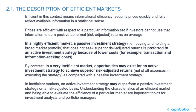Prices are efficient with respect to a particular information set if investors cannot use that information to earn positive abnormal risk-adjusted returns on average. In a highly efficient market, a passive investment strategy — buying and holding a broad market portfolio — that does not seek superior risk-adjusted returns is preferred to an active investment strategy because of lower costs, for example transaction and information-seeking costs.